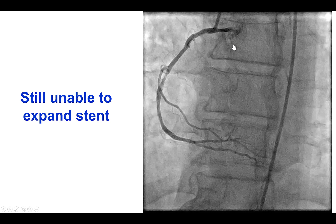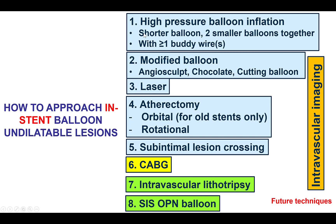So what can be done to expand such stents? This is an algorithm for in-stent balloon-undilatable lesions, as was the case in this patient. The first step is to try high-pressure balloon inflations. One can try two smaller balloons together using the Finet formula, adding the two diameters and multiplying by two-thirds. One can also use one or more buddy wires, which can have a scoring effect on the lesion. The second step is to use modified balloons or plaque modification balloons such as the AngioSculpt, the Chocolate, or a cutting balloon.